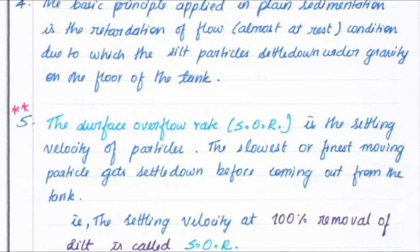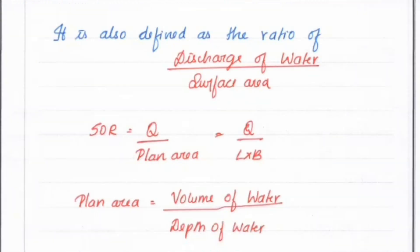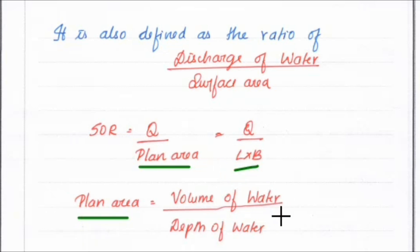The settling velocity at which 100% removal of silt occurs is called the SOR. The SOR is calculated as the discharge of water divided by the surface area: SOR = Q / (L × B). The plan area is equal to the volume of water divided by the depth of water.